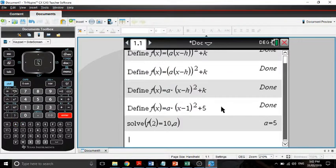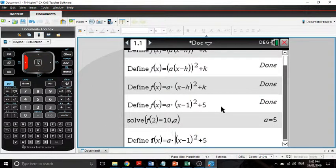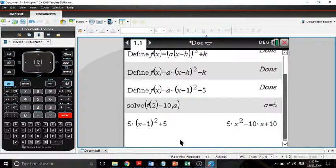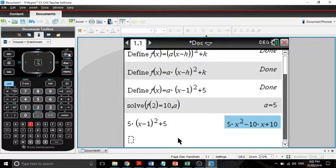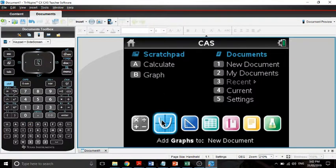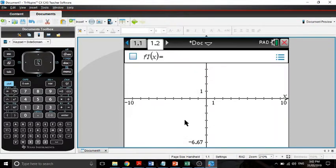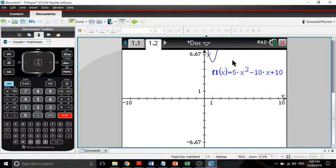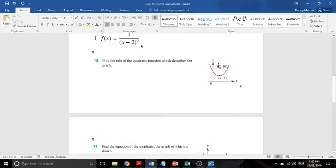So our equation ends up being, I'll delete this so you can see it, 5 times x minus 1 all squared plus 5. And we can check it on CAS by doing that. And then we can, I'm going to copy that. I'm going to go to graphing page. I hope you like listening to bubble guppies. And we're going to paste that. And we'll see that there it is. So that's pretty much what we've got there. So that's how to do that one. That's because we had it in turning point form.